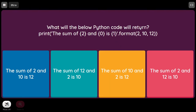What will the below Python code return? The string is 'the sum of {2} and {0} is {1}', and .format(2, 10, 12) is called. The placeholders {0}, {1}, {2} map to: 0 → 2, 1 → 10, 2 → 12. So {2} is 12, {0} is 2, and {1} is 10. The output reads 'the sum of 12 and 2 is 10'. As per the given format order, that is the answer.